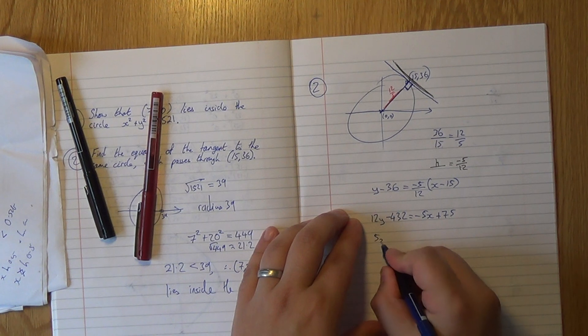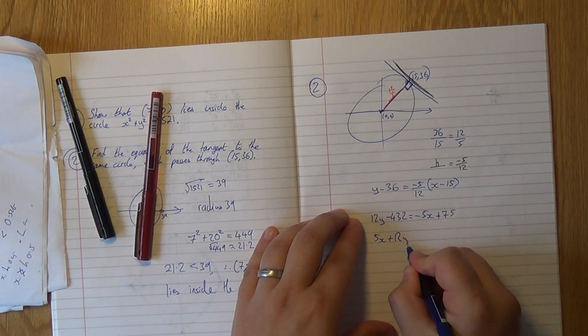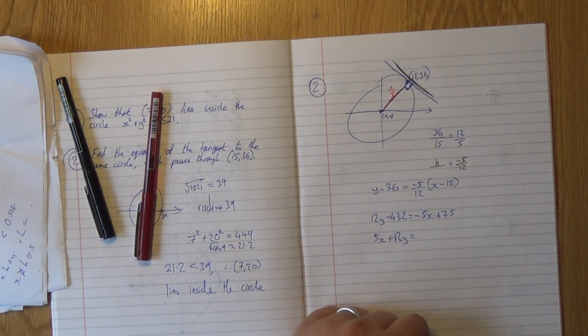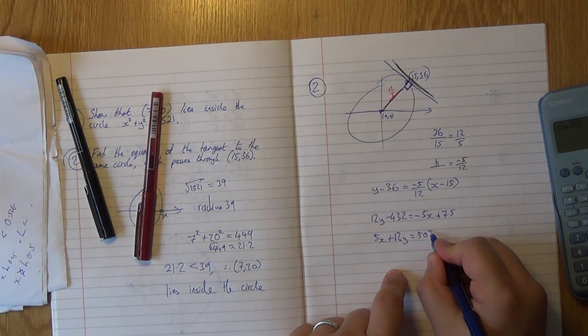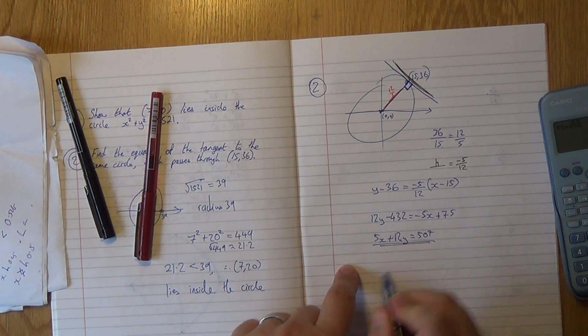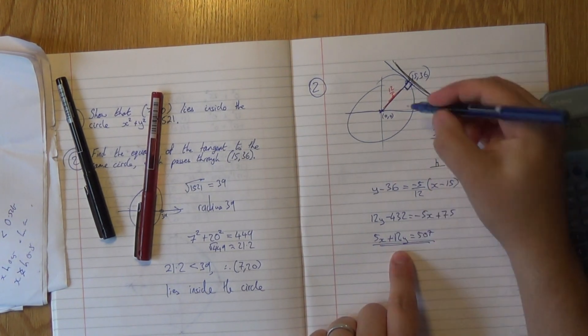Rearrange this a bit. We get 5x + 12y equals whatever these two add up to. So 75 plus 432 is 507. So that is the implicit form of the equation of this tangent.